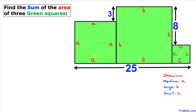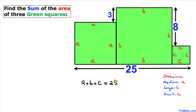Now let's look at side lengths a, b, and c. If we add these up, that's going to be equal to 25. So therefore, a plus b plus c equals 25.